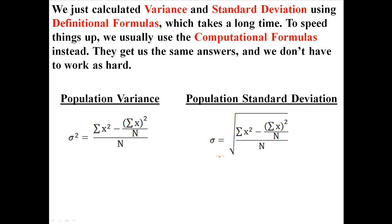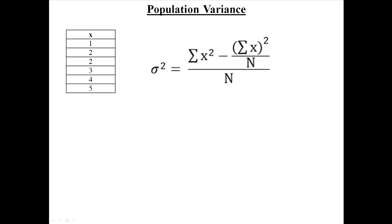Now we just calculated variance and standard deviation using the definitional formulas, which takes a long time. To speed things up we usually use the computational formulas. They'll get us the same answer and we won't have to work as hard. So these are the two formulas for the population variance and population standard deviation.